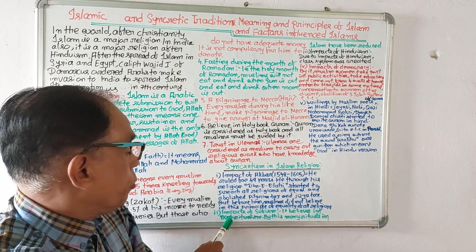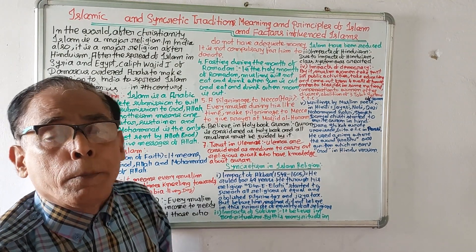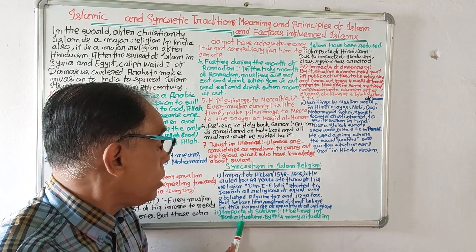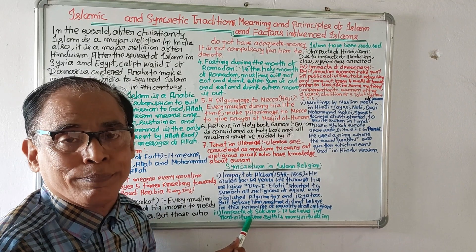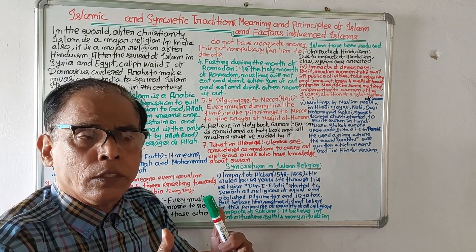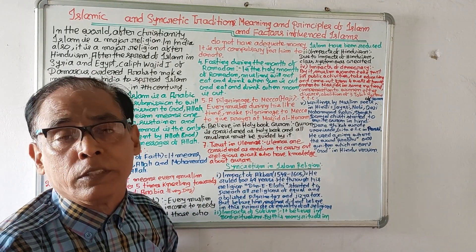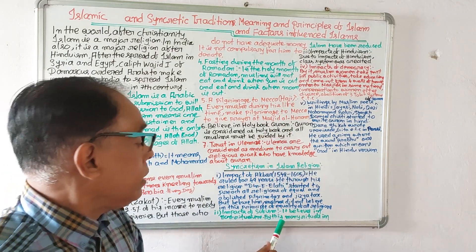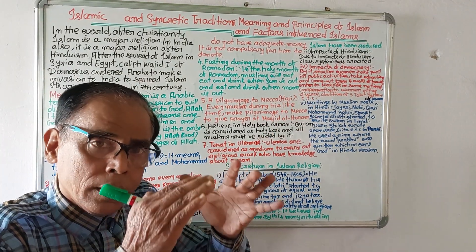Number two is the impact of Sufism. When Sufism became popular, it emphasized non-ritualism — it did not give importance to rituals. By the impact of Sufism, many rituals in Islam have been reduced.